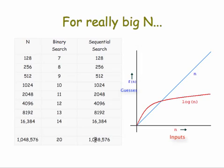And you know, look at the difference when you get up to a million numbers, 20 guesses in binary search over a million guesses in sequential search. So I hope you can see that this type of analysis is important when you're selecting an algorithm to use to solve a problem.